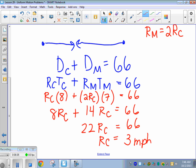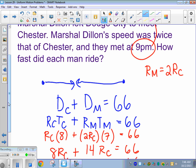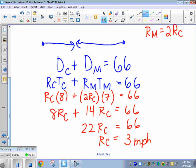Right? Since it's a rate, we're looking for miles per hour. All right, and then we make sure we answer our question, of course. How fast did each man ride? So the rate of Chester was 3 miles per hour. So if we come back over here and plug it in, then the rate of Marshall Dillon is 6 miles per hour.